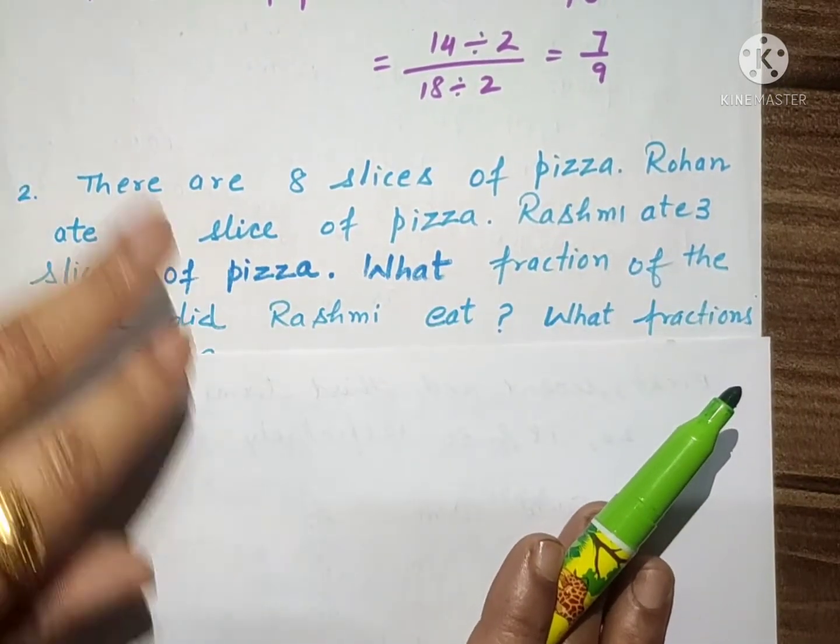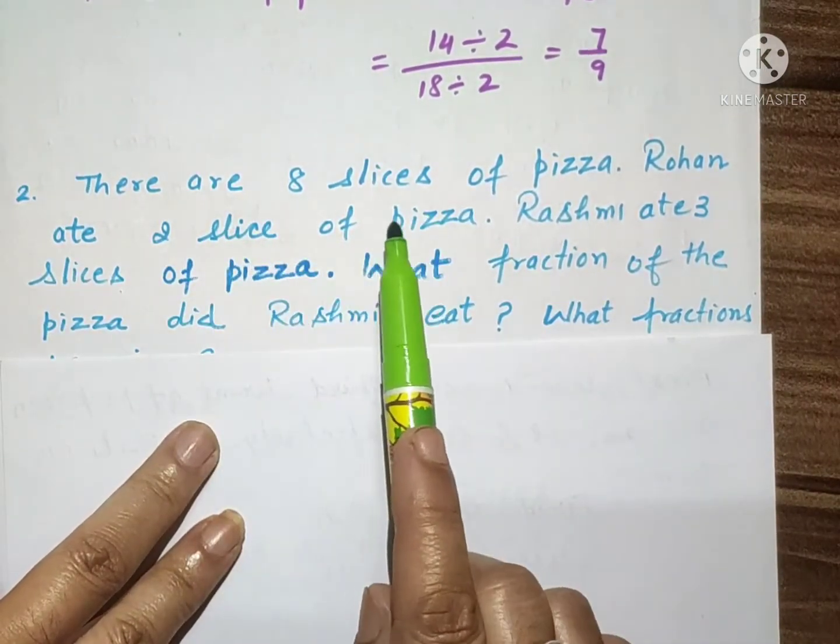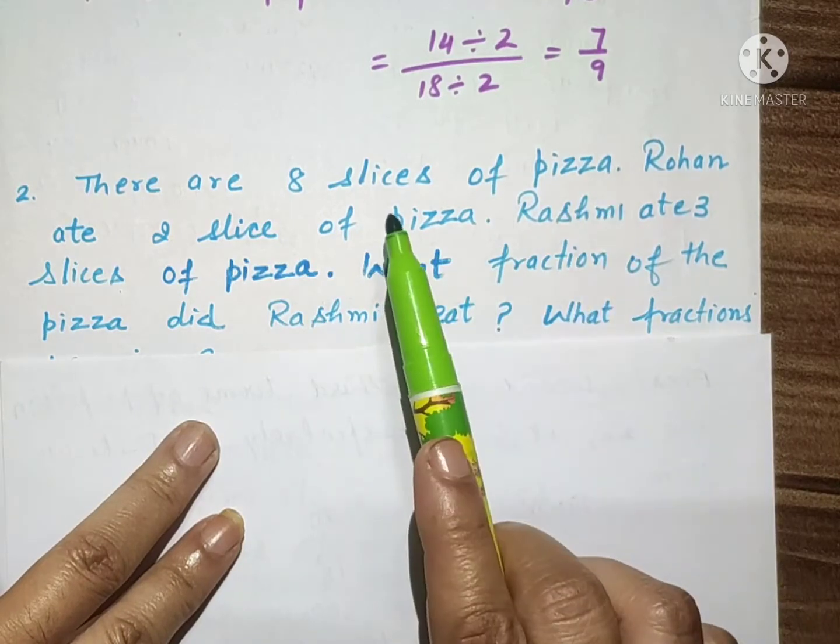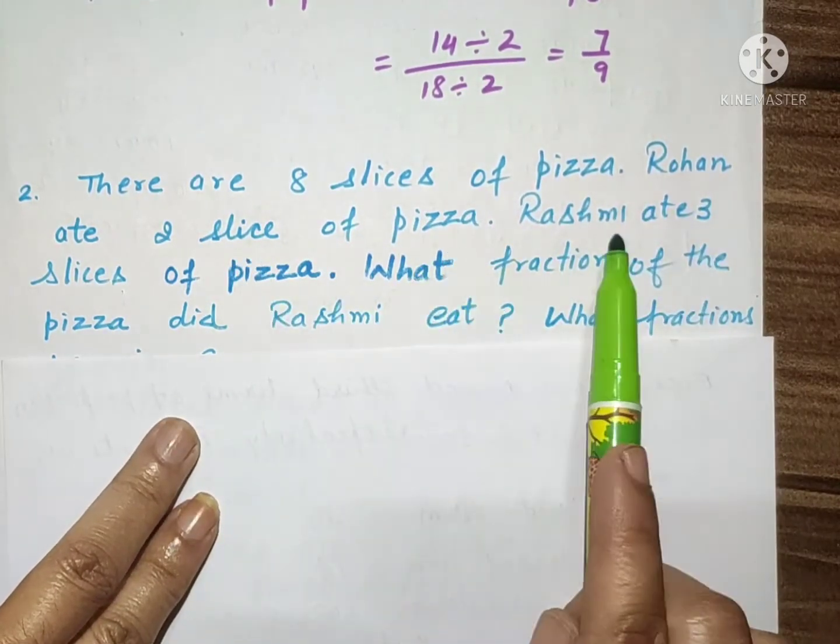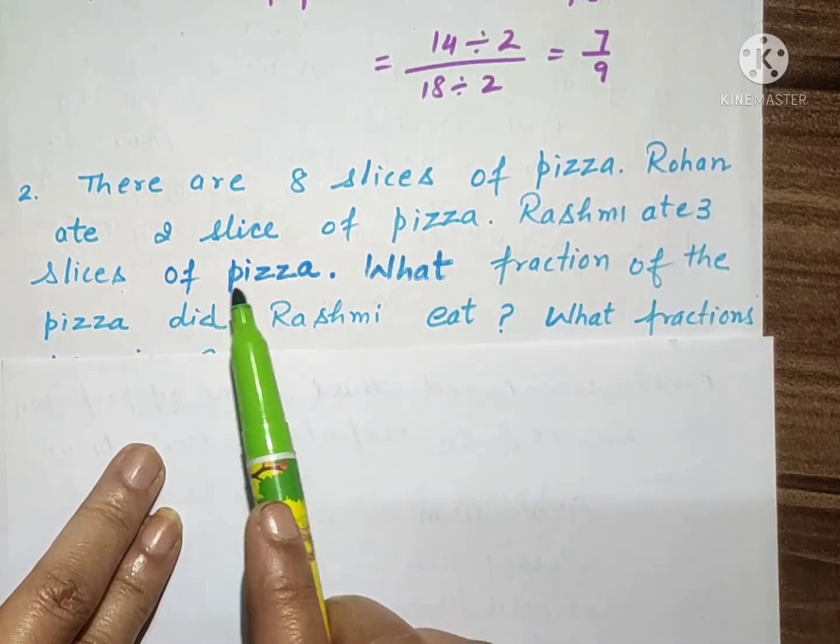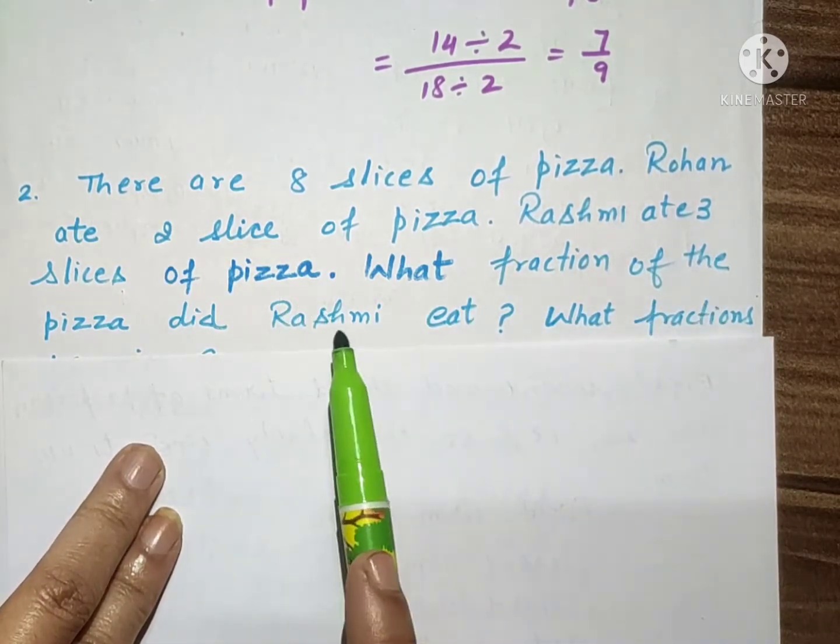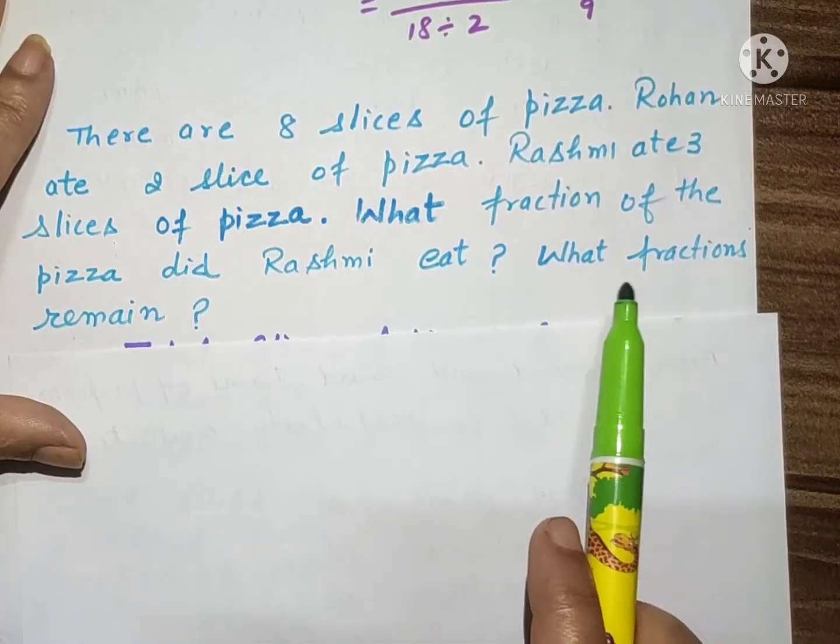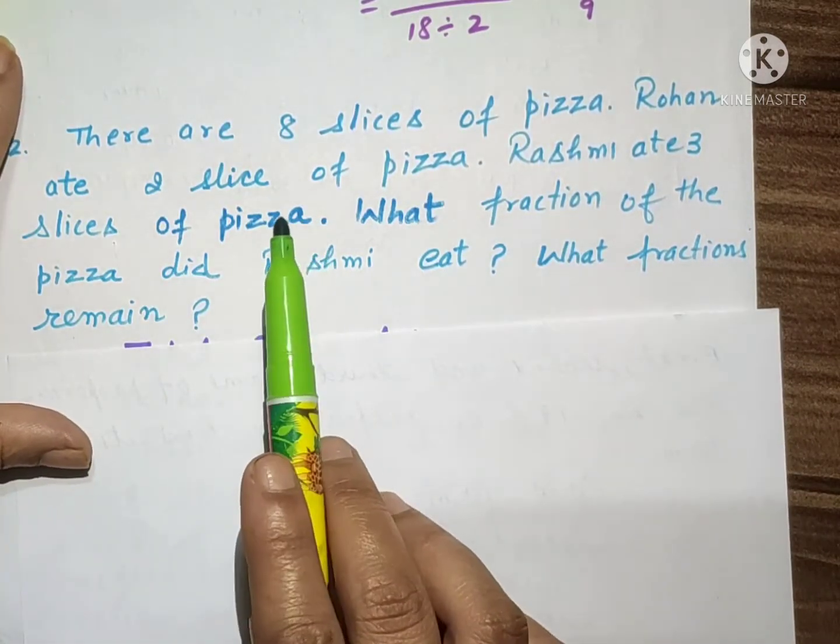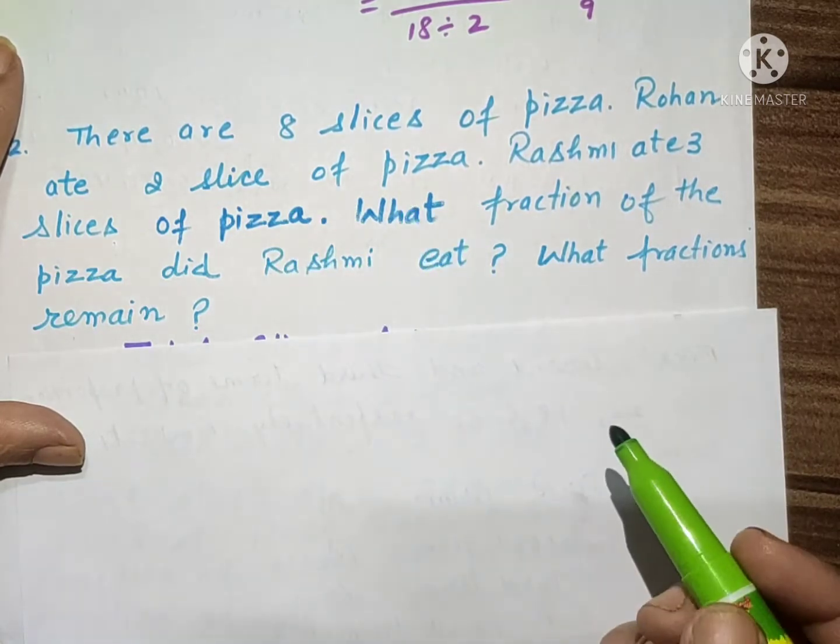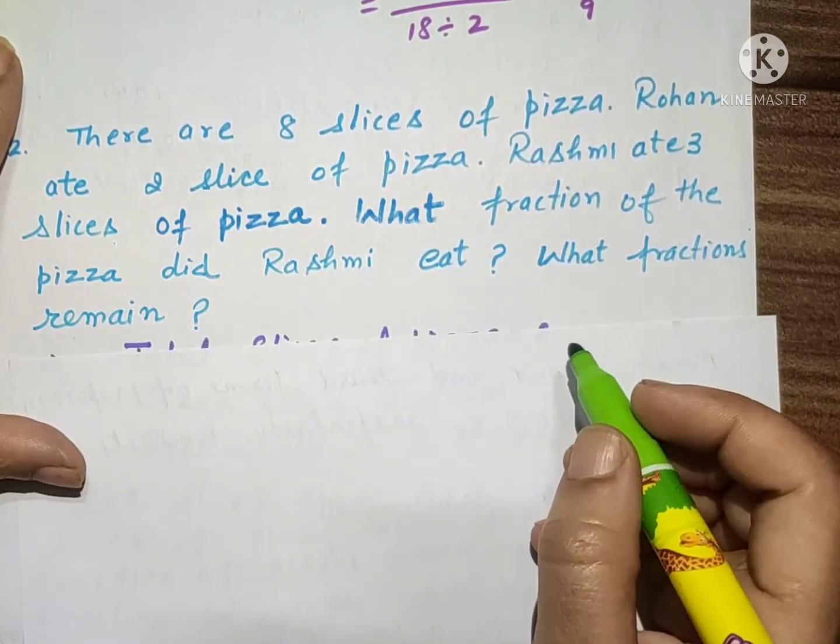Take next question. Next question is: There are 8 slices of pizza. Rohan ate two slices of pizza, Rashmi ate three slices of pizza. What fraction of pizza did Rashmi eat? What fractions remain? Toh humne question diya ki jo pizza hai uske eight slices hai.